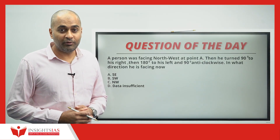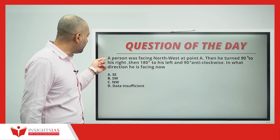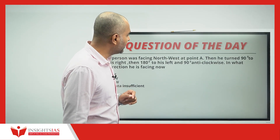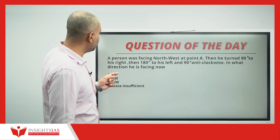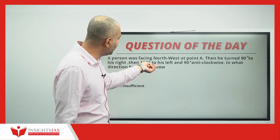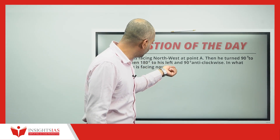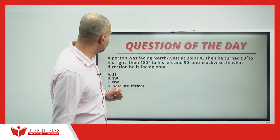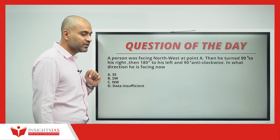And this is the question of today: a person was facing northwest at point A. Then he turned 90 degrees to his right, then 180 degrees to his left, and 90 degrees anticlockwise. In what direction is he facing now?